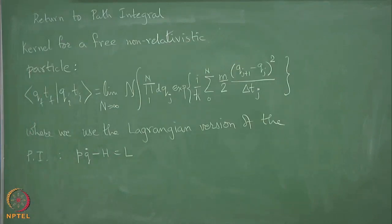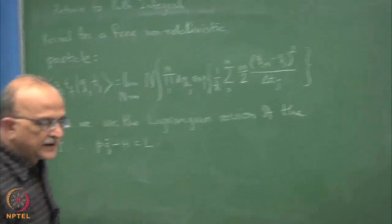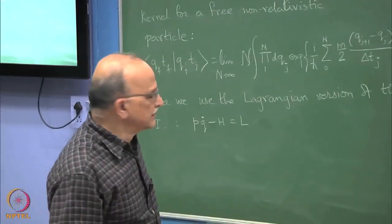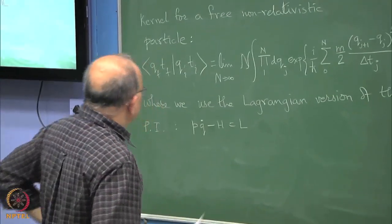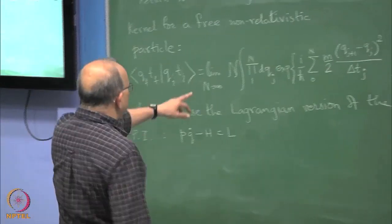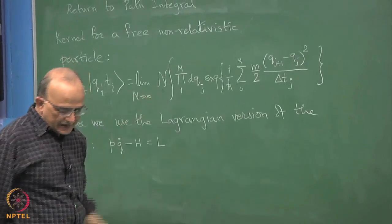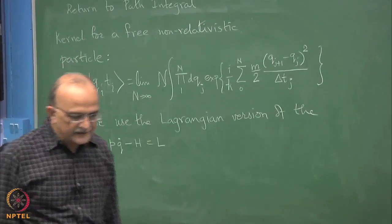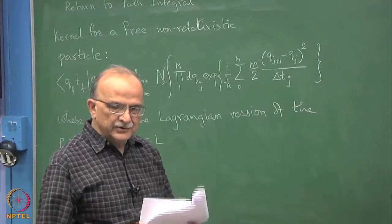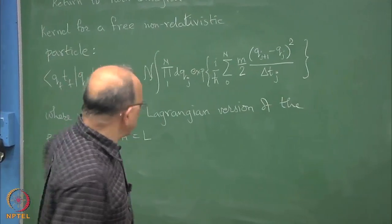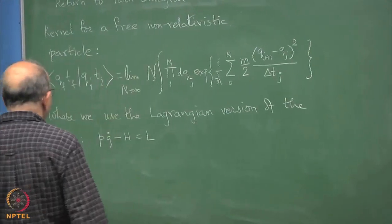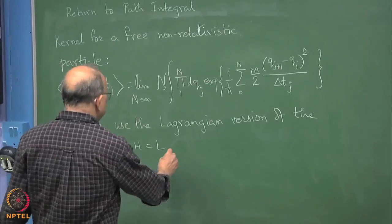However, the p-slice p-integrals are there, and that is what this unknown N is for. It is actually not an unknown — you can calculate it exactly.